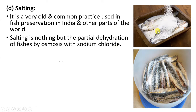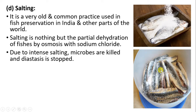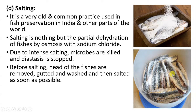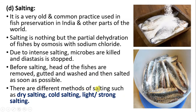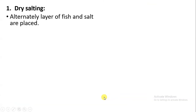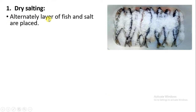With salting, the fish becomes dry. Through intense salting, microbes are also killed and the diastasis process is stopped — in diastasis there is separation of body parts, so by stopping it, all body parts remain intact. Before salting, the fish head is removed. There are different methods of salting: dry salting, cold salting, light salting, and strong salting. In dry salting, alternate layers of fish and salt are placed — first a layer of salt, then fish, then salt, then fish.